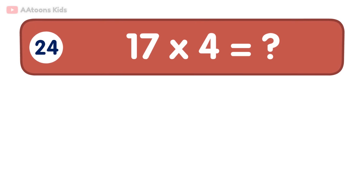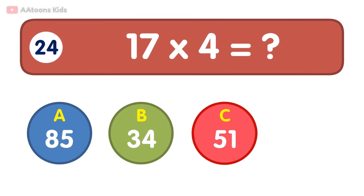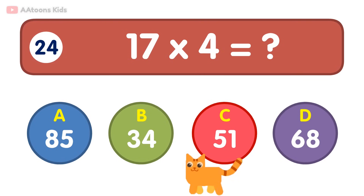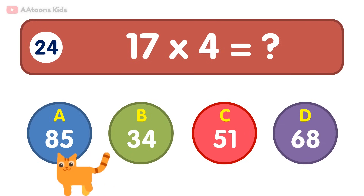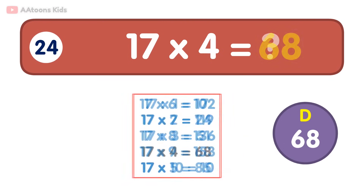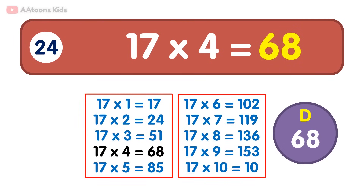17 times 4 is equal to 68. 17 times 4 is 68.